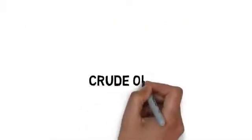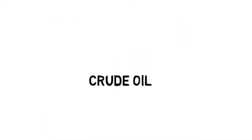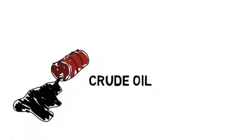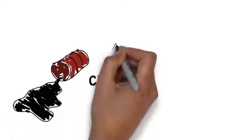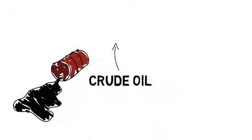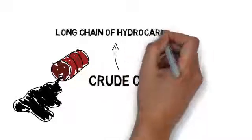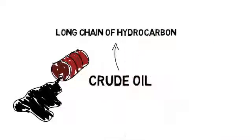Crude oil is basically a long chain of hydrocarbon that looks like black sticky glue. To make this useful, we subject it to a process called fractional distillation.